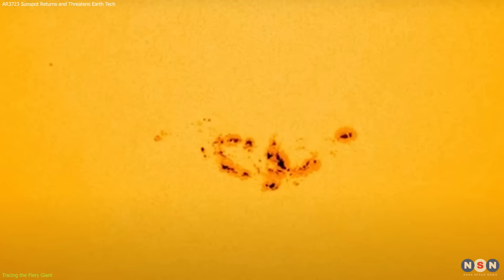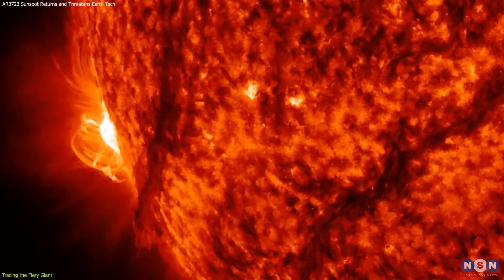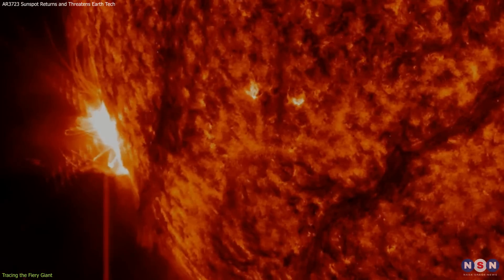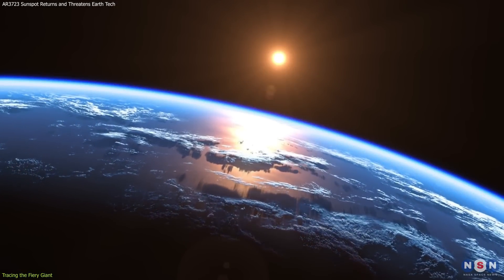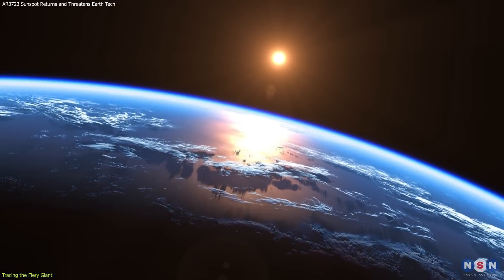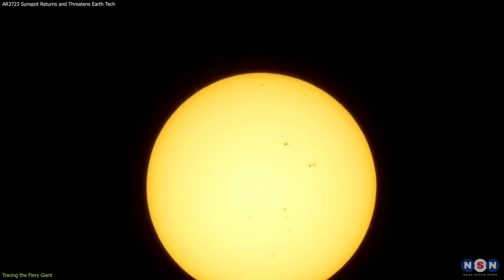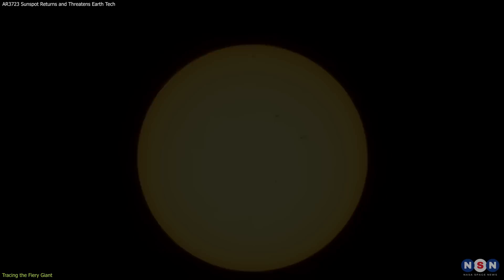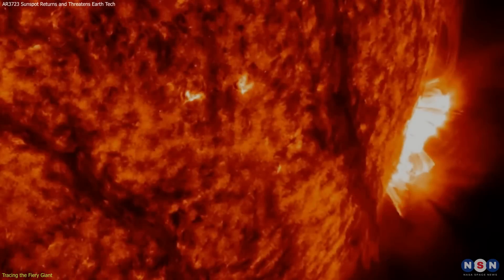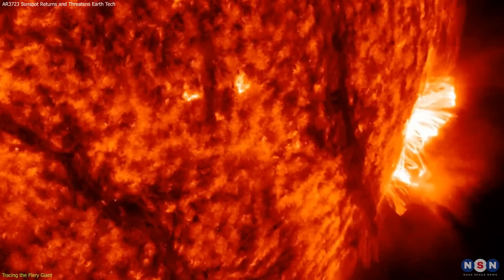It began its journey as AR 3664, which we covered previously in our videos. It evolves through its appearances to become a key player in solar observations. Each rotation of the sun brings the sunspot back into Earth's view, slightly altered. This cyclical visibility is crucial for scientists to track and study changes in its structure and activity, which help us understand the sunspot's growth phases from its emergence as a simple spot to a complex region capable of producing severe solar flares.